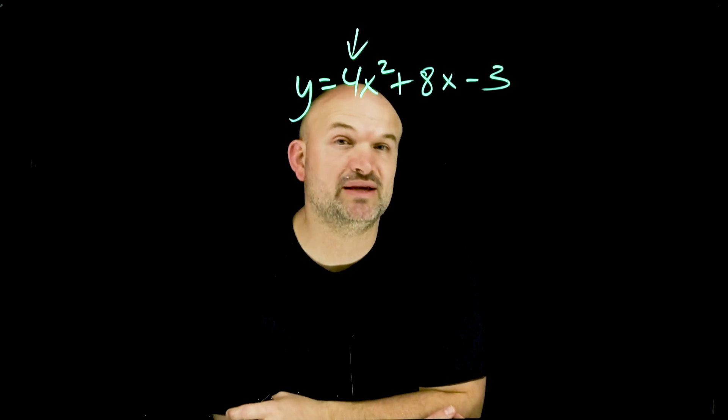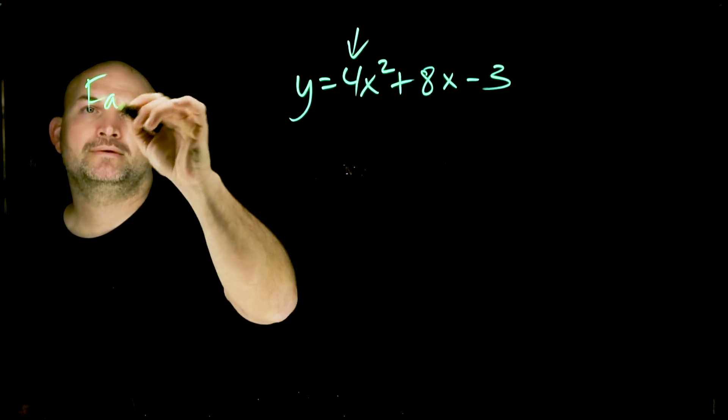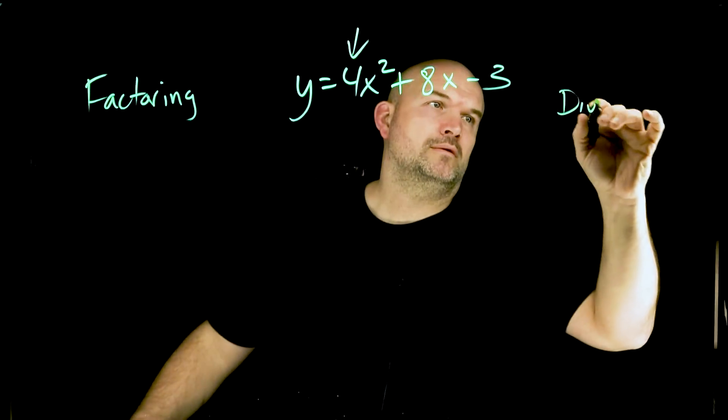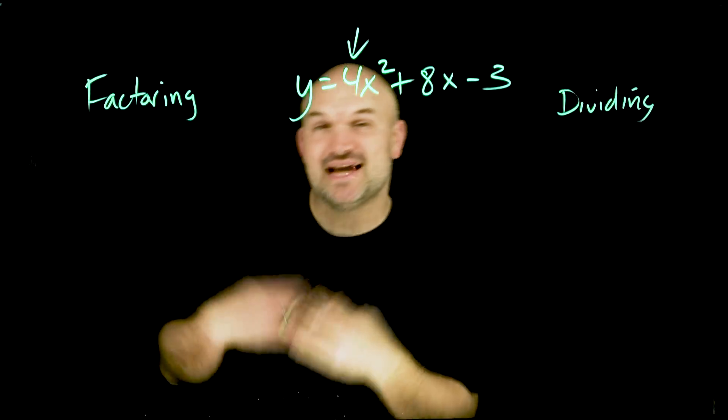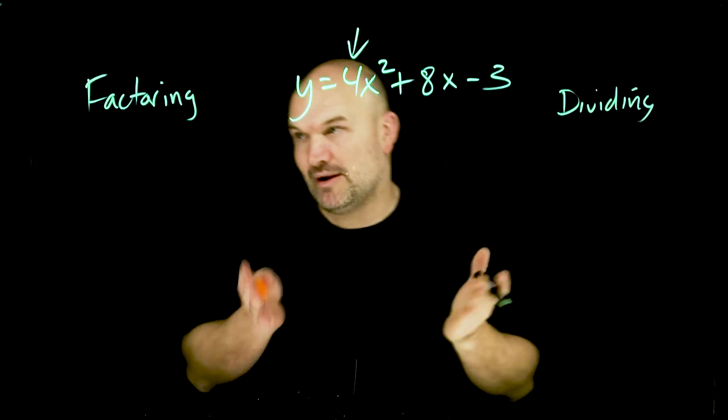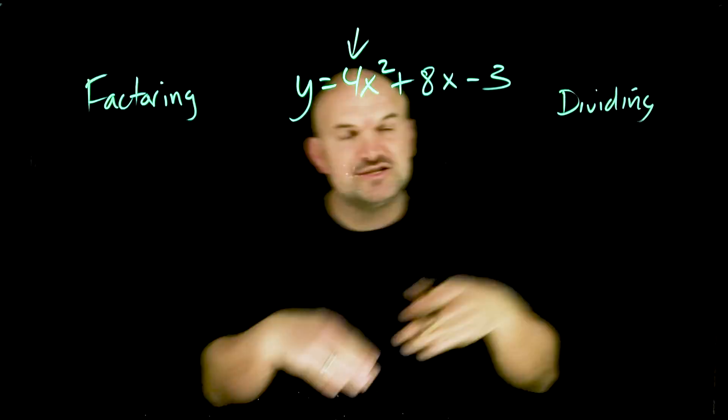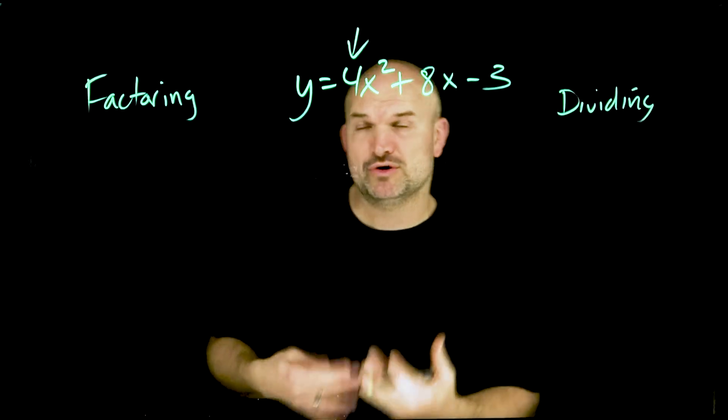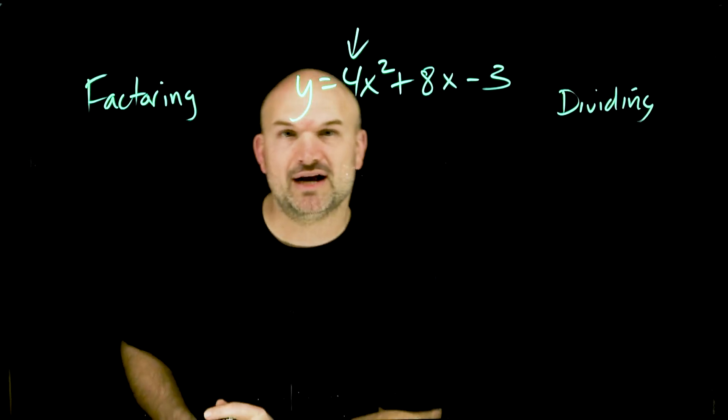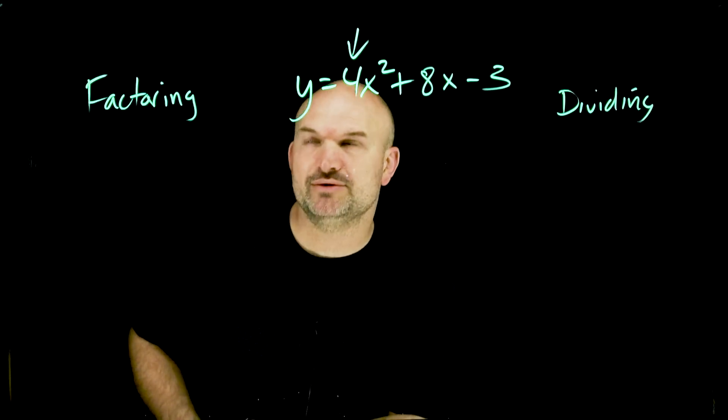Now there's two different ways we can get rid of the 4. We could do factoring or we could do dividing, and in this video that's exactly what I want to do. I want to show you the factoring approach as well as the dividing approach, and you can make the determination on which approach you like better for getting rid of your coefficient when you need to complete the square.